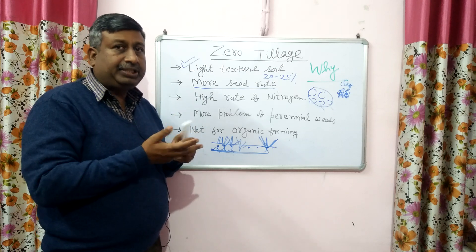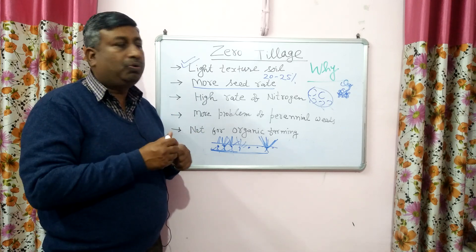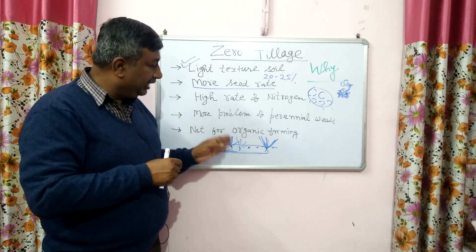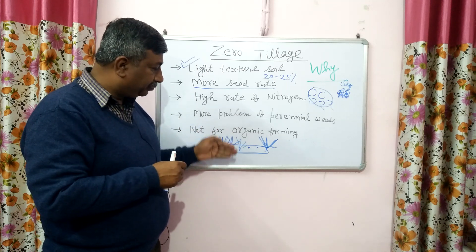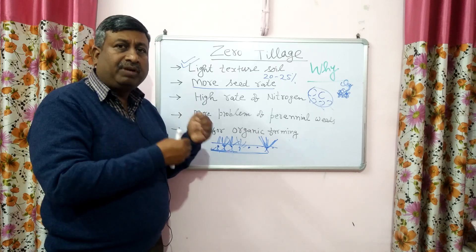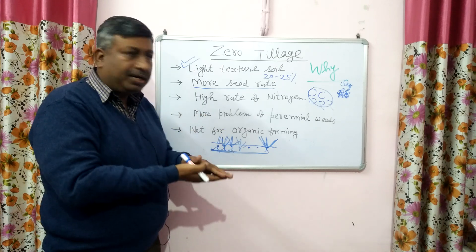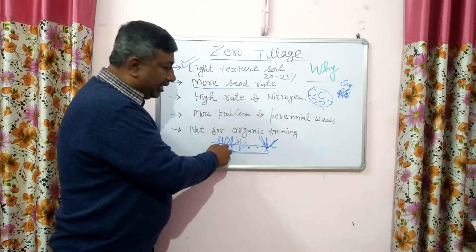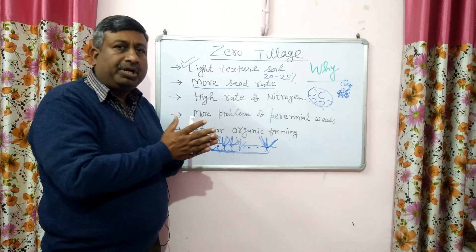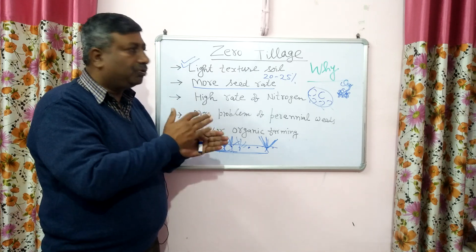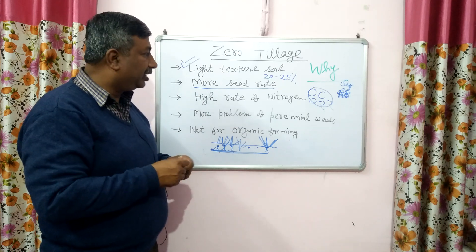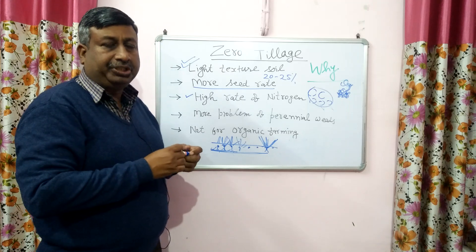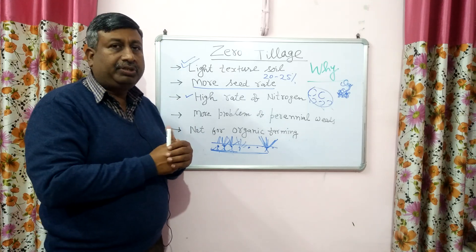In the zero tillage system, when wheat is sown, tillering is low and plant height is less in the initial years because we are not going for tillage, so soil is not pulverized. The soil is very hard and compact, root deployment is less, and tillering is less, resulting in reduced overall growth. Next is that a high rate of nitrogen application is required in zero tillage system.